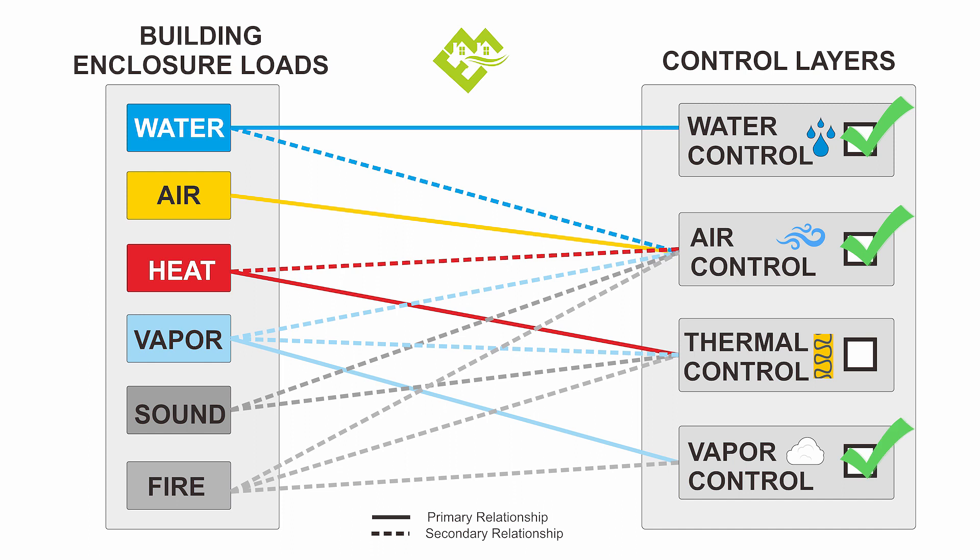Modern-day building products and airtight construction can be breathable, which means they can diffuse moisture trapped in the wall construction without moving air through. Watch our follow-up video on building performance, where we go over the concepts of control layers for maintaining a healthy and higher performing building.